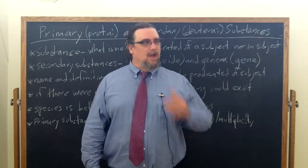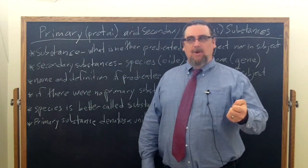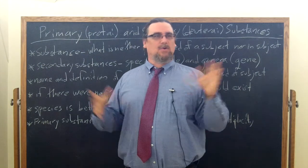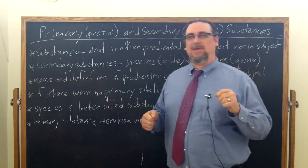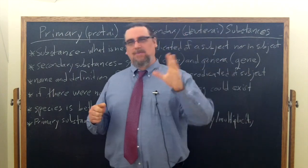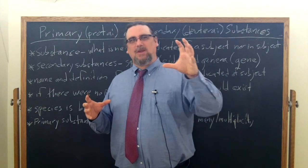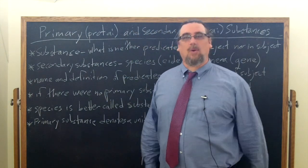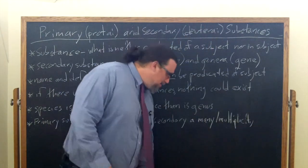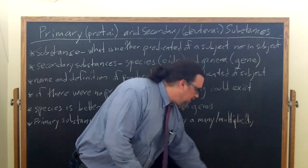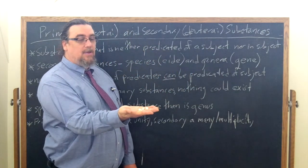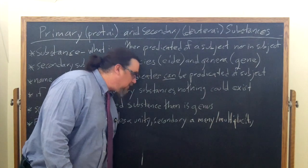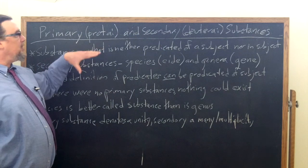We could do this with tools as well — our classification. We have an individual hammer and another individual hammer; they don't look exactly the same but they're part of the species hammer. Then we could put it into the genera of tools or instruments. You see, we can do this with lots of things. Chalk — I have three pieces of chalk in my hand, you see them right there. They are all within the species of chalk, and they are individual things as well. So we have primary substance and secondary substance.